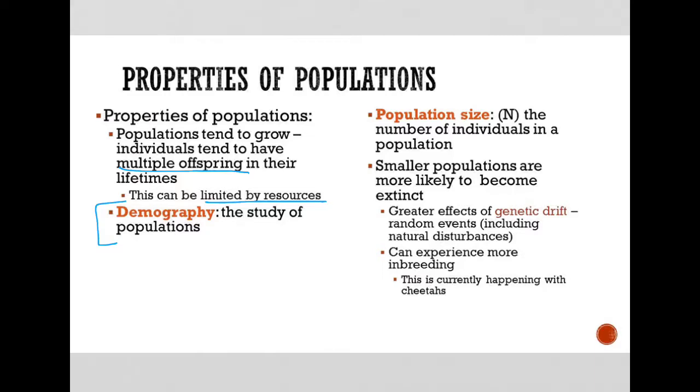One property of populations is going to be population size, which we represent with a capital N. That's the number of individuals in a population. So you can have five individuals, ten individuals, or 100,000 individuals.